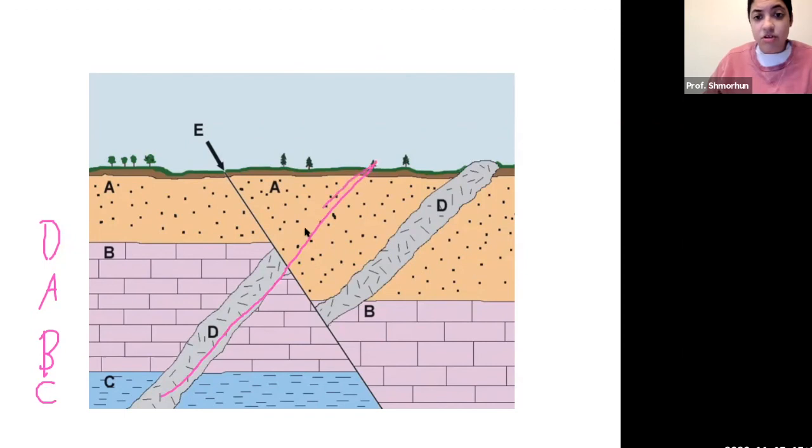It would have originally looked like this. And then you have the faulting of E, which is then offsetting it.